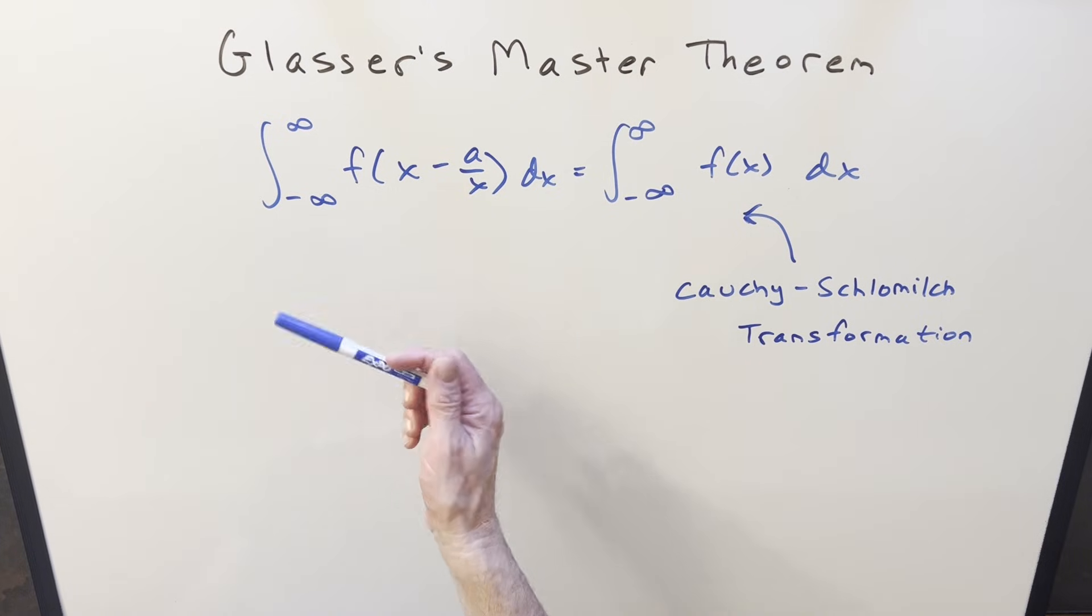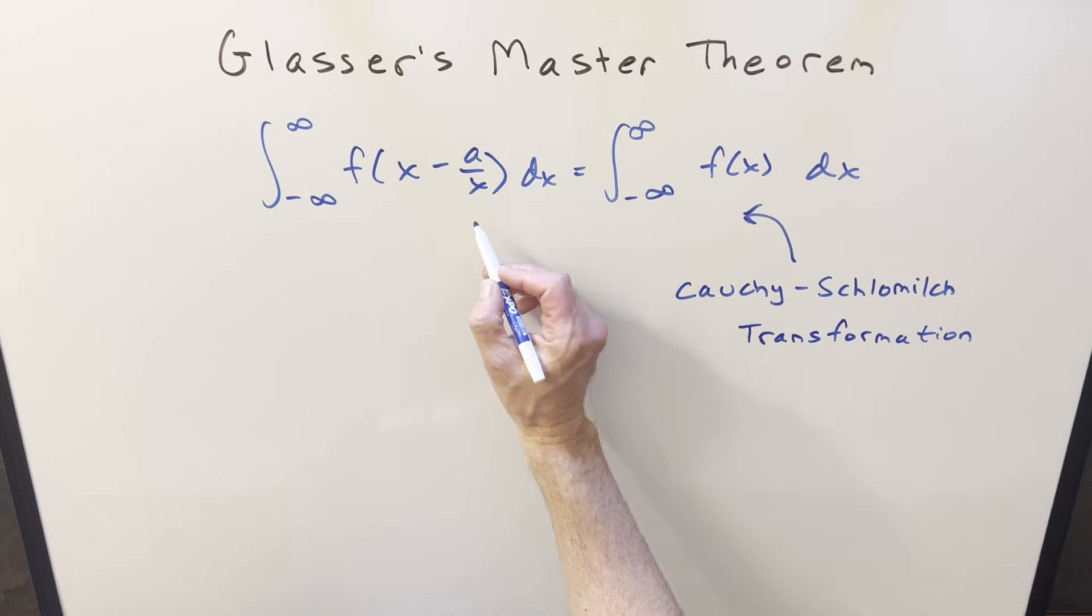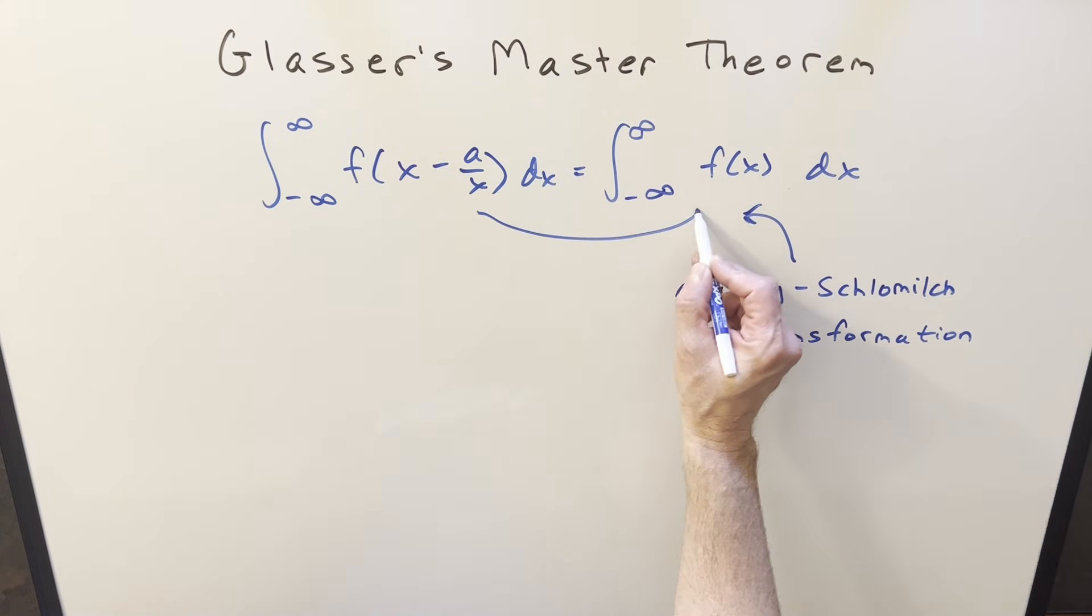We have the integral from minus infinity to infinity of f of x minus a over x dx, and we're saying we can simplify this thing by transforming it to just this integral over here, integral from minus infinity to infinity f of x dx.